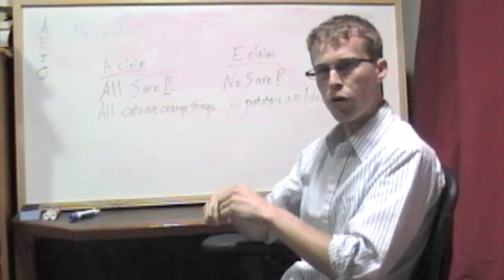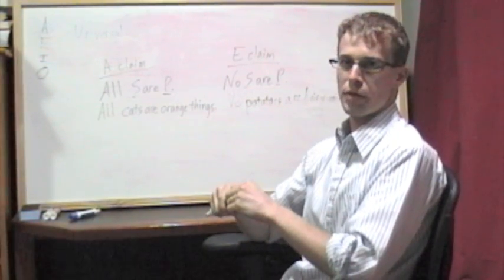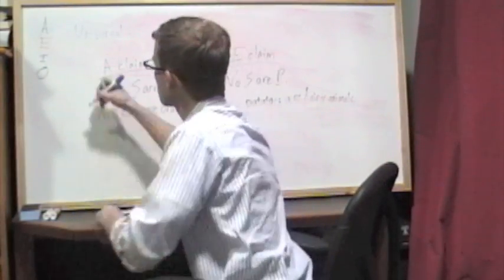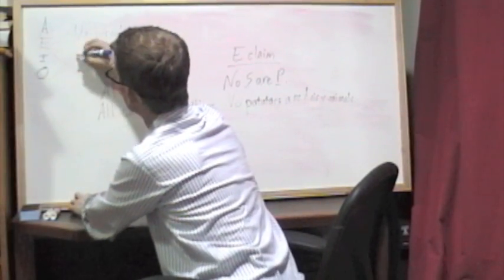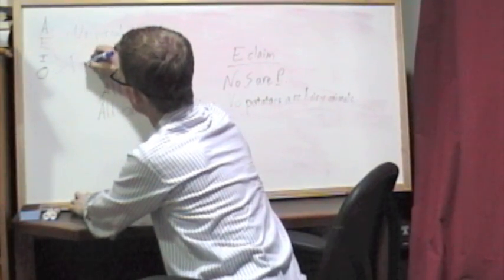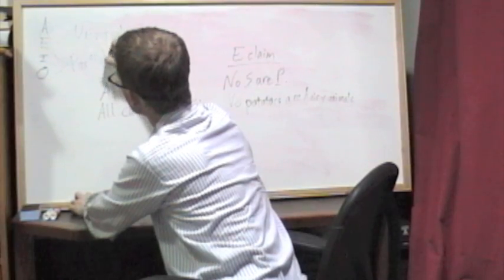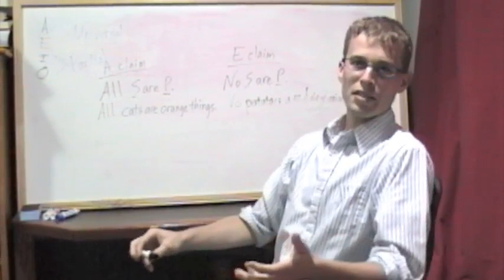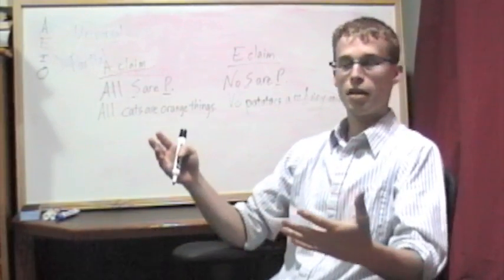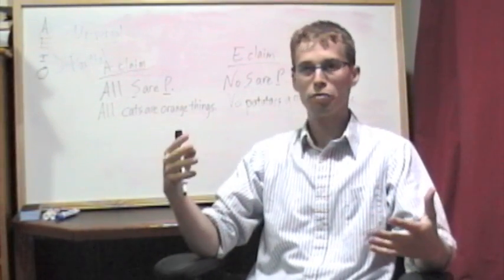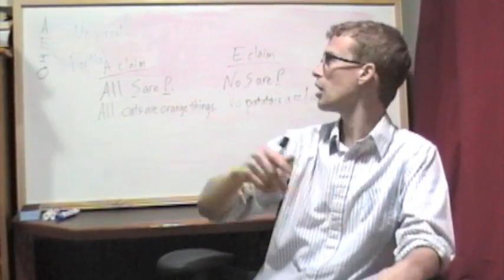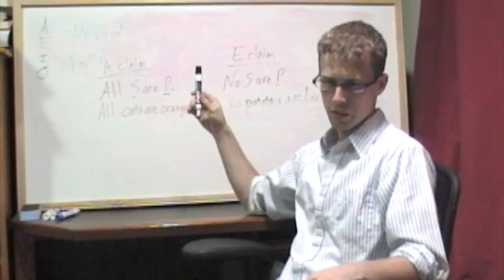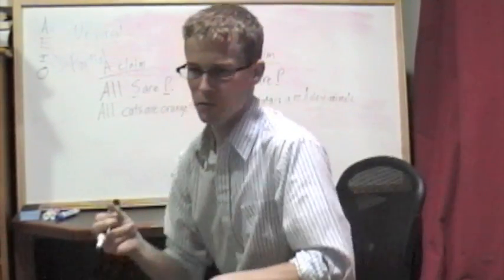So, I and O claims are different in that respect. They're what we might call partial claims. As you might have guessed, they're not about the whole class. They're about just part of the class. And how part of the first class, part of that first category, relates to the second category.